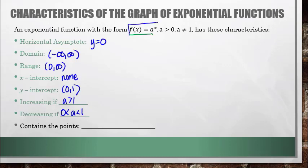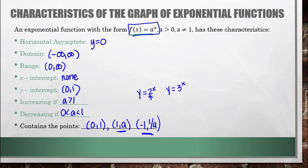Any graph of this form is always going to contain the points: 0, 1; 1, A; and negative 1, 1 over A. Go back to the graph of y equals 2 to the x and verify that the point 1, 2 and negative 1, 1/2 are on that graph, since it has an A value of 2. Similarly, the graph of y equals 3 to the x should have 1, 3 and negative 1, 1/3 on it. These three points will always be on those graphs.